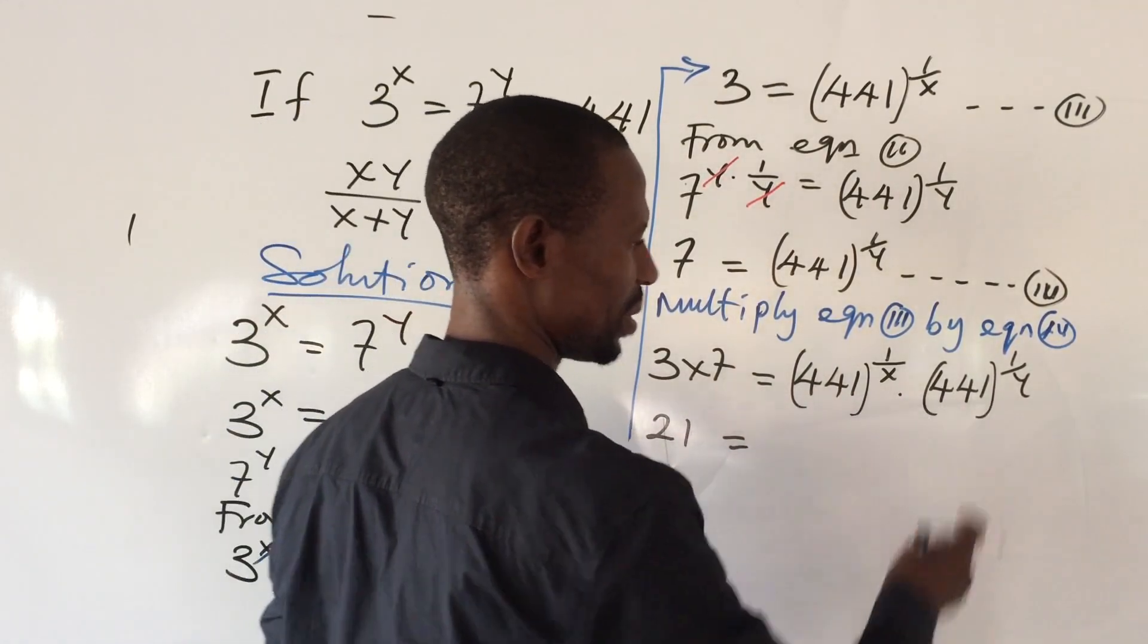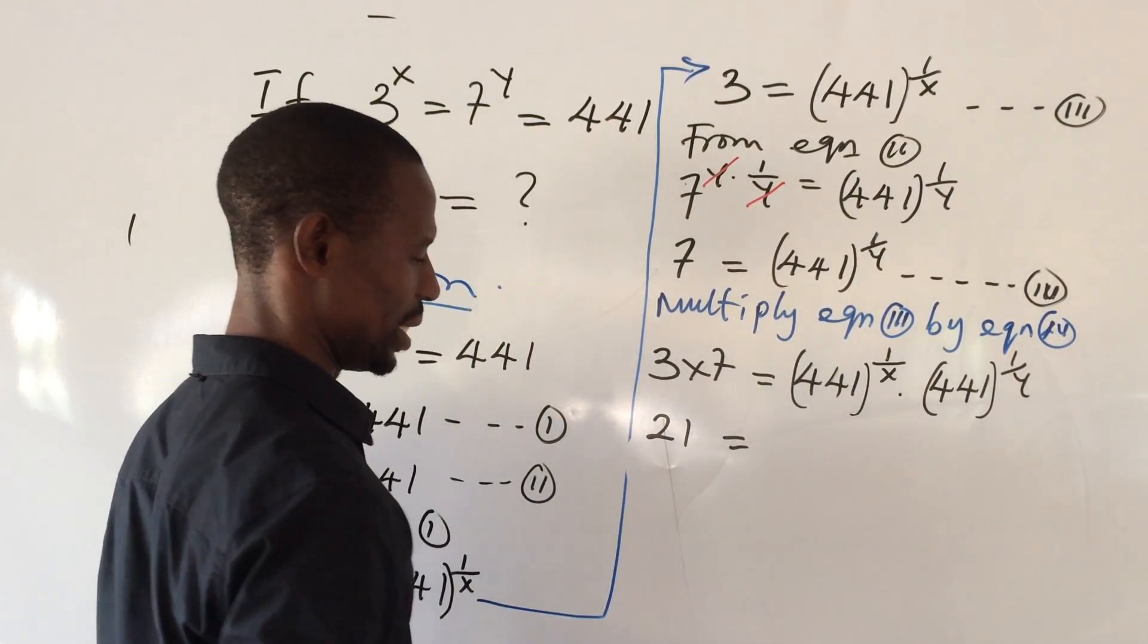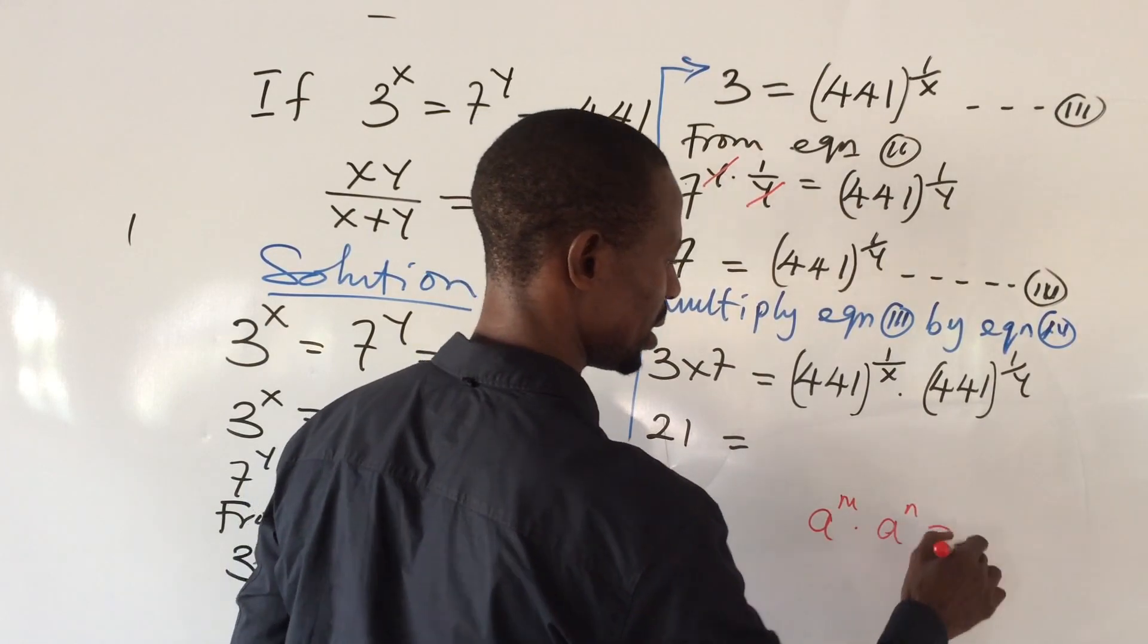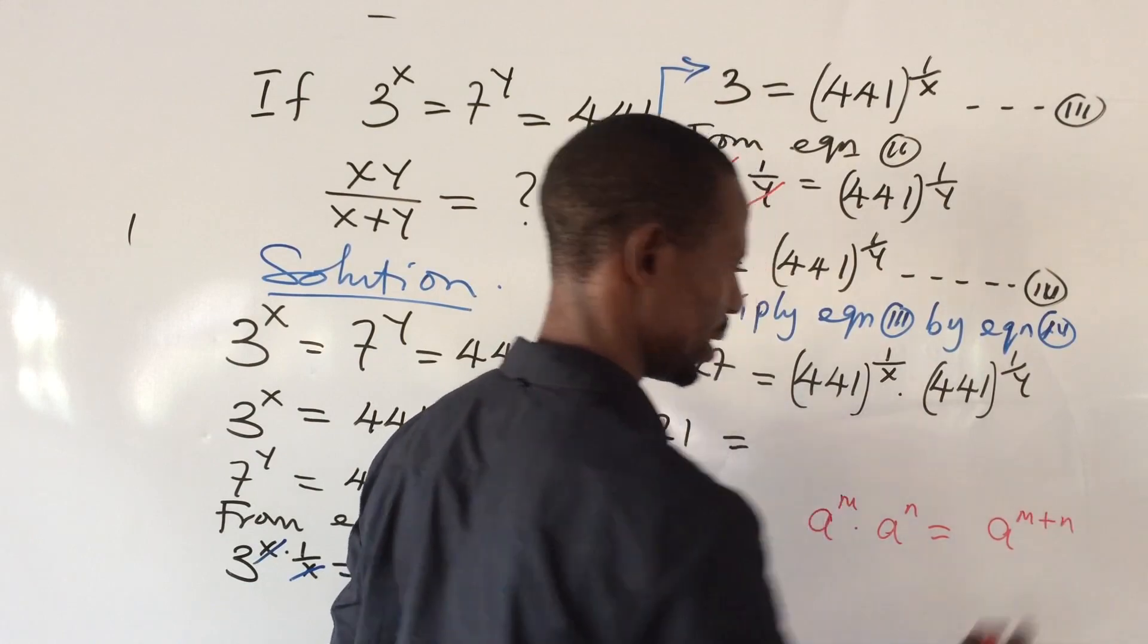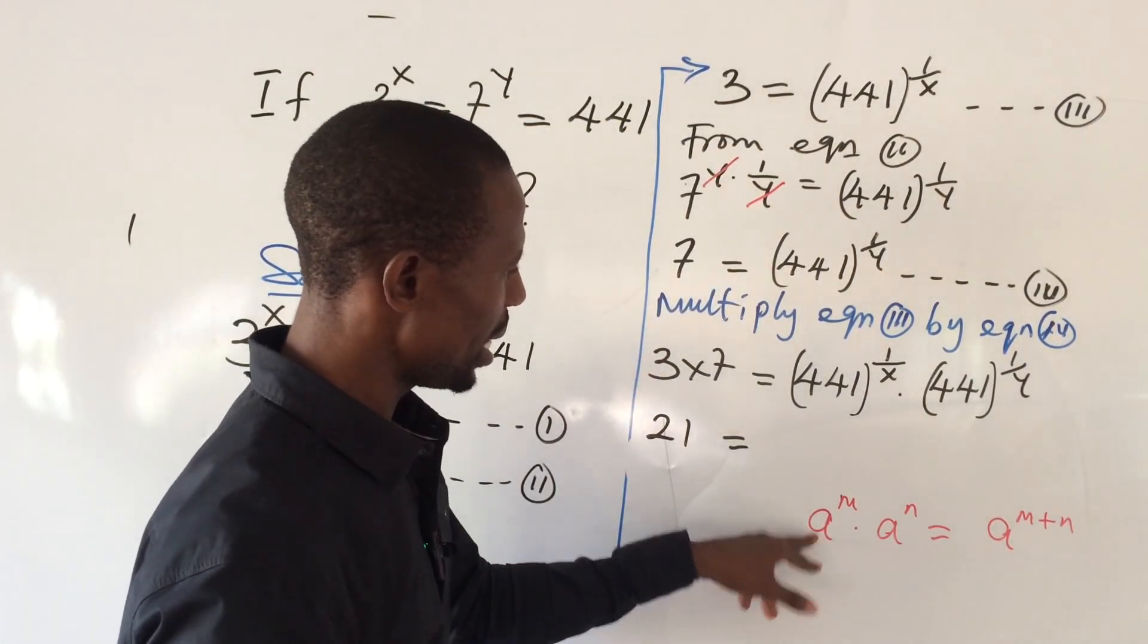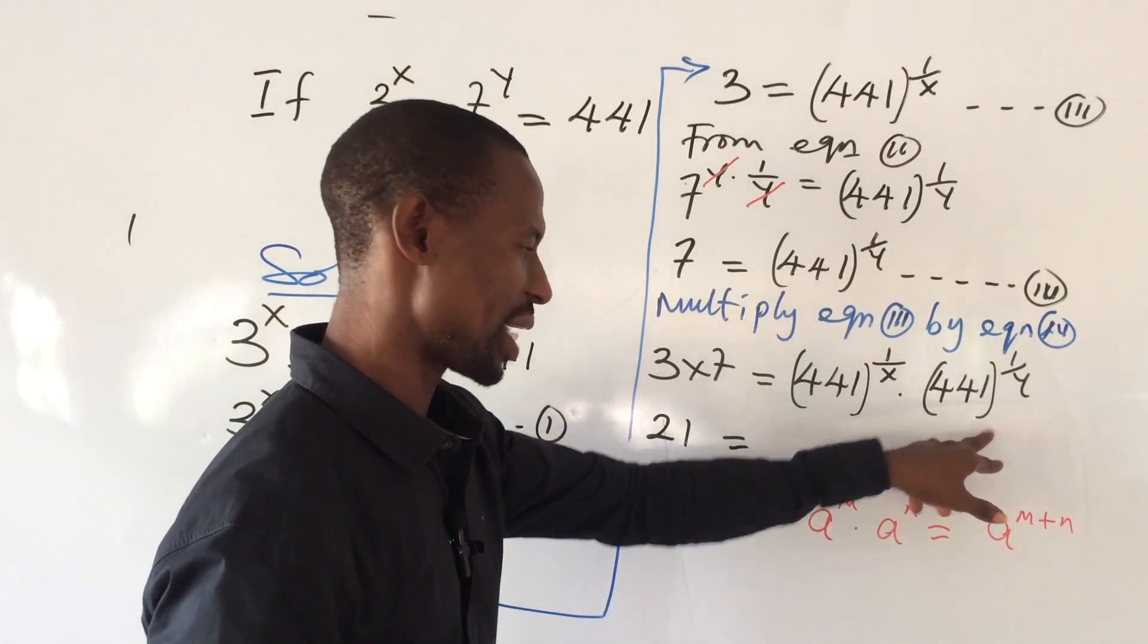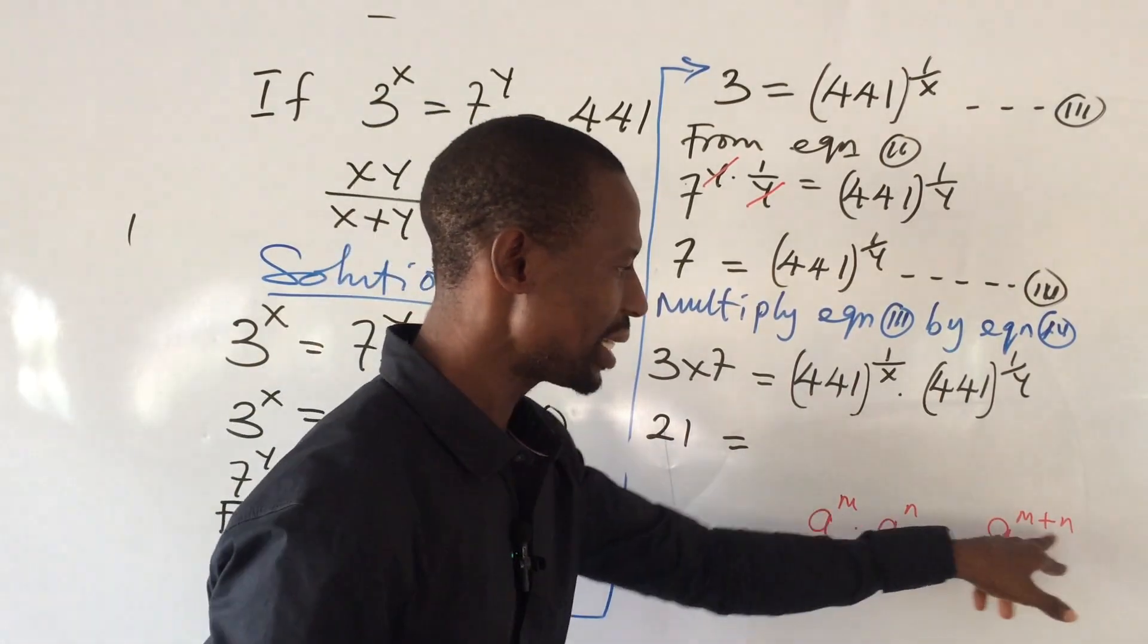From here we're going to have here 21 equal to, look at the bases are the same. And according to the law of indices, if we have a to the power of m times a to the power of n, this will give us a to the power of m plus n. This is a law in indices. So from this law, our a is 441, our m is 1 all over x, the a is 441 on this other side, the n is 1 all over y. So we have to add the power.